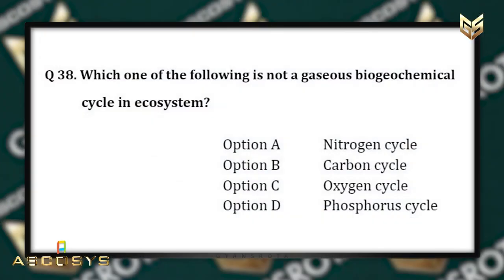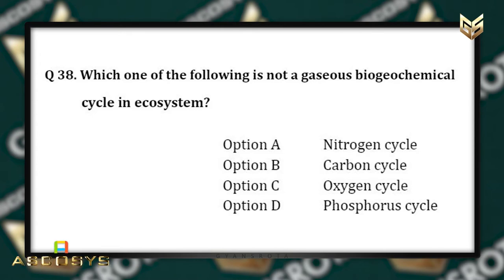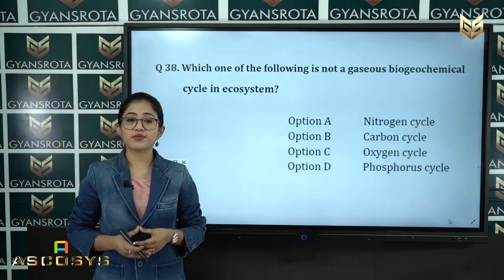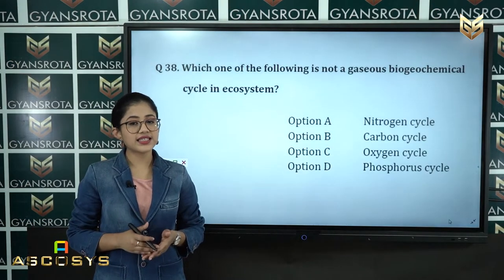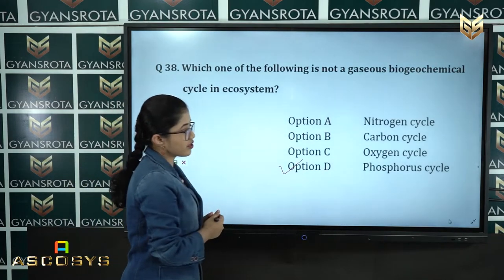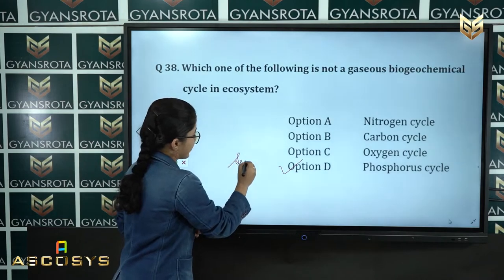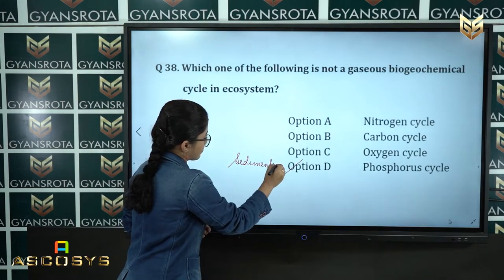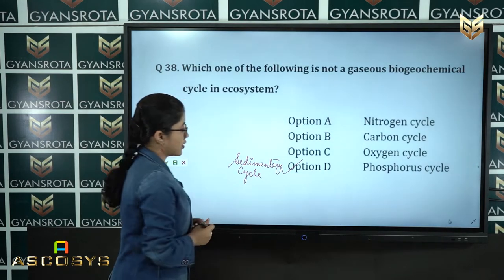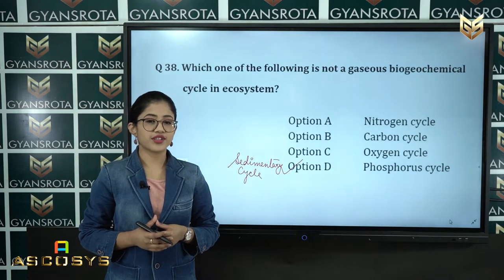Question 38: Which one of the following is not a gaseous biogeochemical cycle in ecosystem? Option A: Nitrogen cycle, option B: Carbon cycle, option C: Oxygen cycle, option D: Phosphorus cycle. The correct answer is option D, Phosphorus cycle, because it is a sedimentary cycle, not a gaseous cycle.